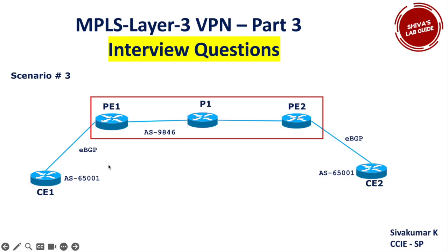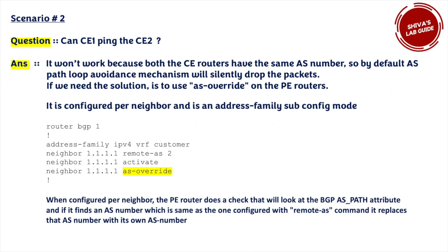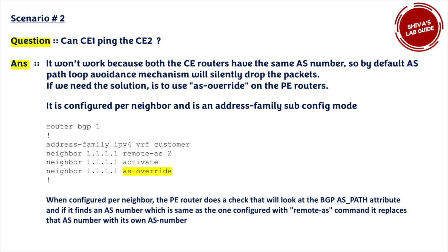In this topology using private AS 65001, when a packet goes to PE2 and PE2 has 'as-override' configured toward CE2's neighbor, it replaces AS 65001 with 9846 and sends it to CE2 — so CE2 will not drop the packet. An interviewer may also ask if there's another way besides as-override. In BGP there is the 'allowas-in' command. You can give 'allowas-in 1' to allow the AS number to repeat more than once in the AS path without dropping the packet. Both methods work, but in service provider environments 'as-override' is most commonly used.